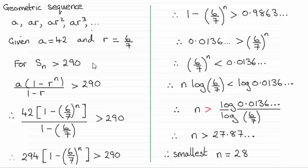And this is quite a common question. For this question it turns out that the smallest value of n is 28. So it's important to be familiar with this particular type of method.